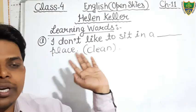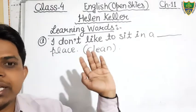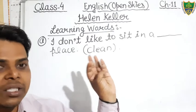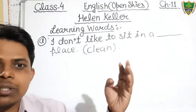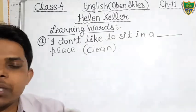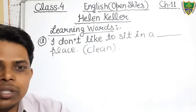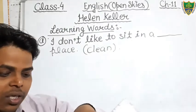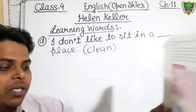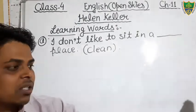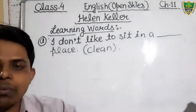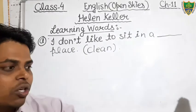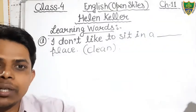Today we will discuss the exercises given in the chapter. There are so many exercises given: learning words, true/false, fill in the blanks, and multiple choice questions. Open your English book to page number 94. The exercises are given at page numbers 94, 95, and 96. First of all, we will discuss the learning words exercise.